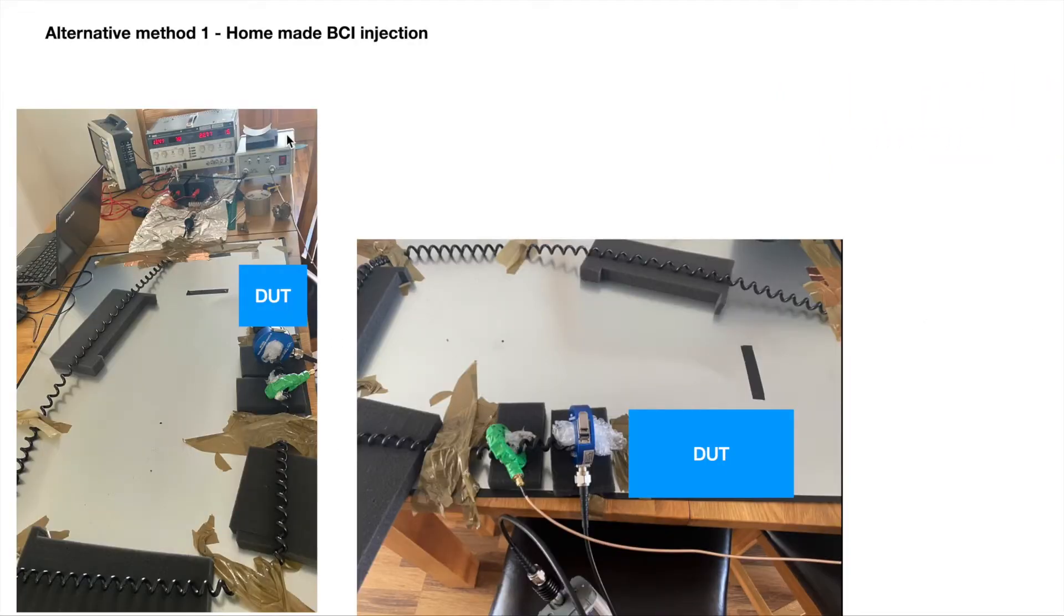The product on the test is an automotive part, which during the BCI EMC immunity test showed problems between 5 MHz and 10 MHz range.